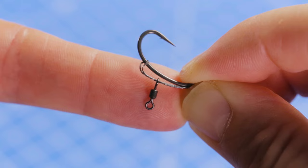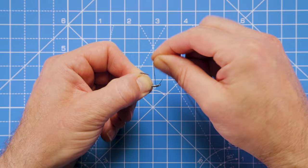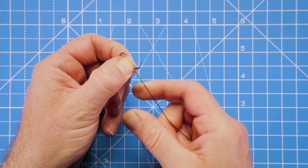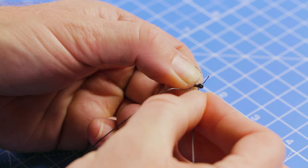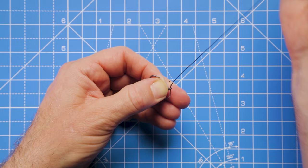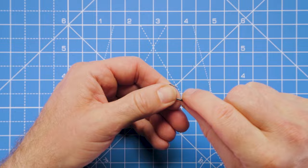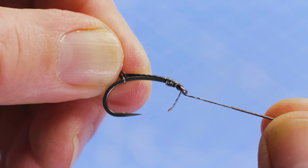And now we can tie a simple knotless knot. I'm using a six turn knotless knot here, so that's six turns down, and then take that hook link back through the eye of the hook to complete the knot.